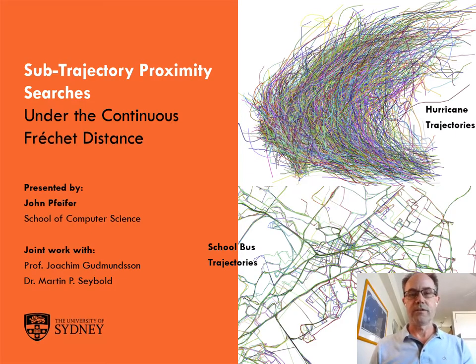Hi, I'm John Pfeiffer and I'm a student at the University of Sydney in the School of Computer Science. Today I'm going to talk about sub-trajectory proximity searches under the continuous Fréchet distance. This is joint work with Joachim Goodmanson and Martin Seibold.